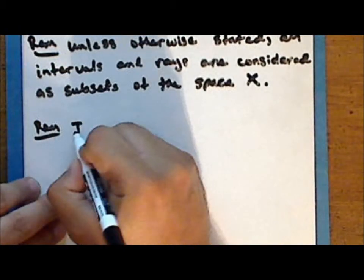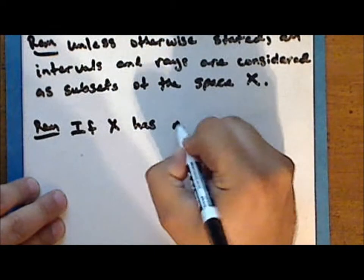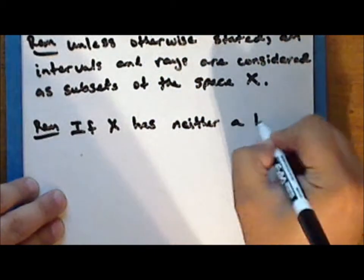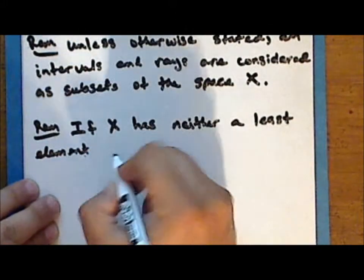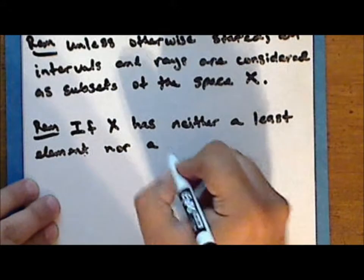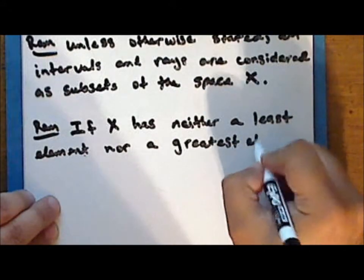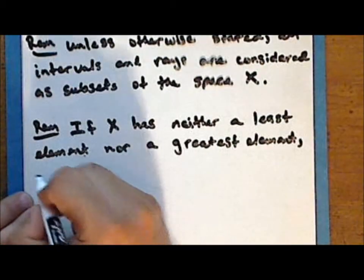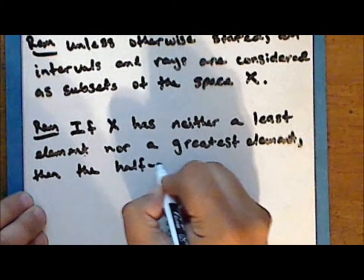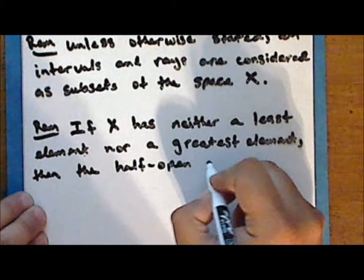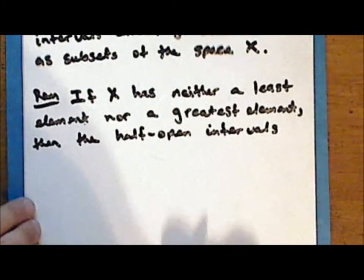Notice that if the underlying set X has neither a least element nor a greatest element, then the half-open intervals are neither open nor closed.